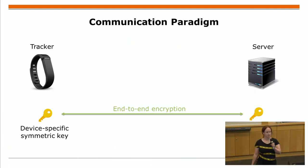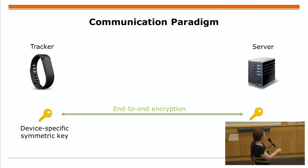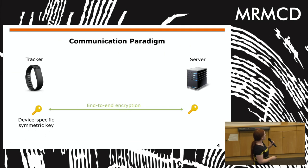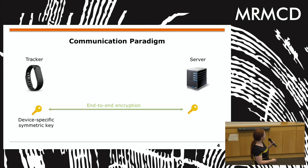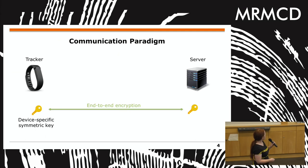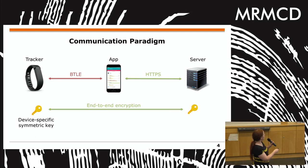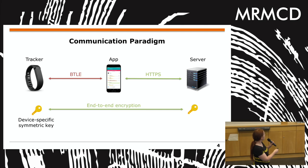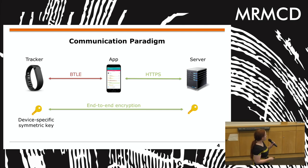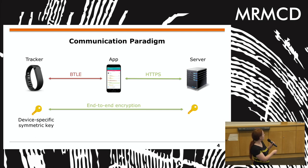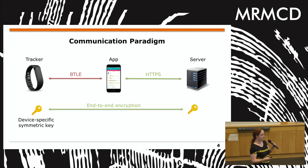Starting with the system overview: you always have a tracker and a server which use end-to-end encryption. This encryption is symmetric — there is a device-specific key on the tracker and also on the server, which is equal for both, but each tracker has its own key. On top of this end-to-end encryption you have Bluetooth LE, which is not secured — marked red — plus HTTPS, always forwarded via an application. So you have this end-to-end encryption with other layers on top, but you can't really do anything obvious at first glance.